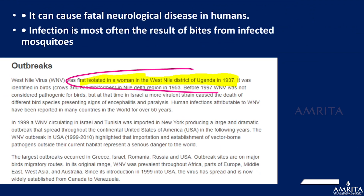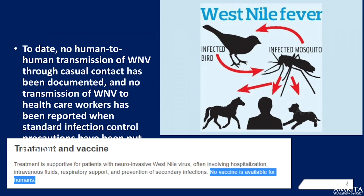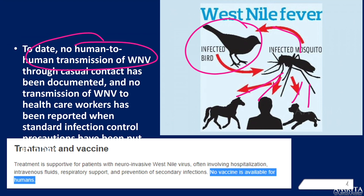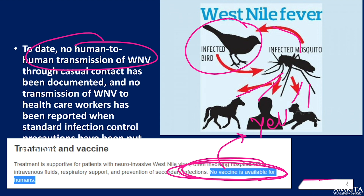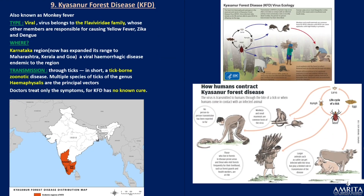West Nile fever was first detected in the West Nile district of Uganda — like Zika, which also originated in Uganda's Zika forest. It is a neurological disease in humans transmitted through bites of infected mosquitoes. The transmission cycle is similar to JE: infected bird → infected mosquito → humans and other animals. No cases of human-to-human transmission have been found, and no vaccine is available for West Nile fever.